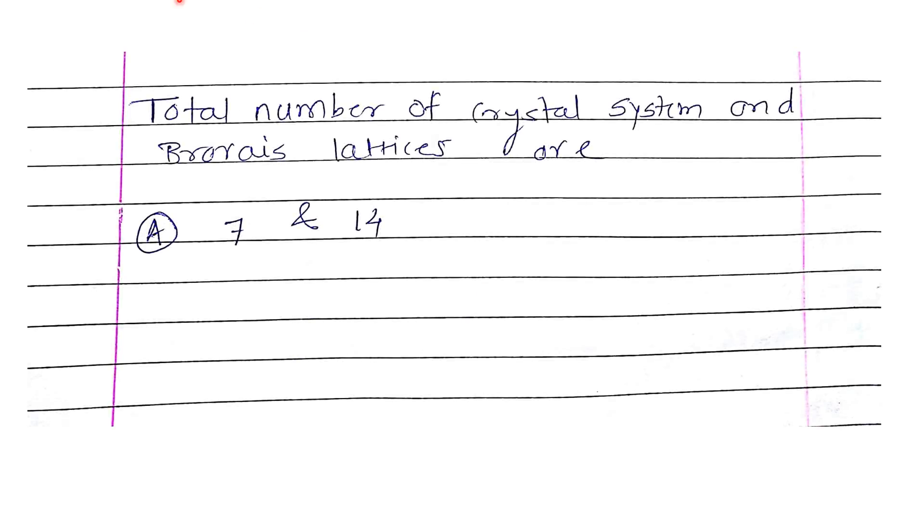Going on to the next question. These are very simple questions. The total number of crystal systems and Bravais lattices are - there are four options given in this multiple choice question. The correct option is: crystal systems are 7 and Bravais lattices are 14.